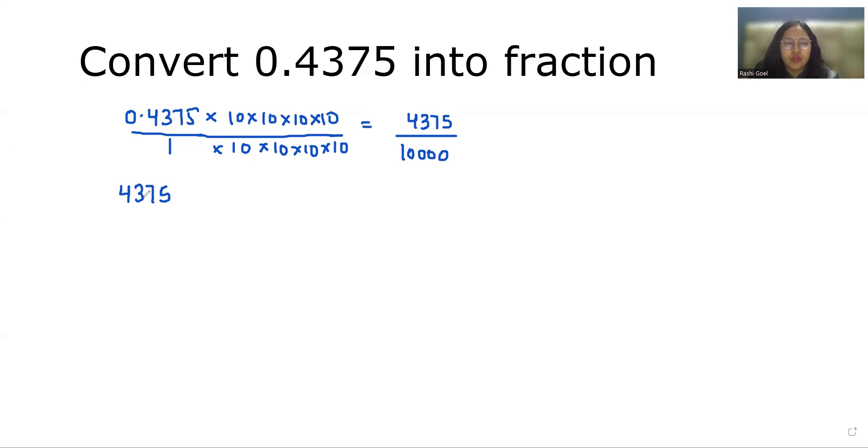So the factors of 4375 are 1, 5, 7, 25, 35. Factors are those which when we divide with the number it does not give us remainder. If you want a detailed video, check in the description box.